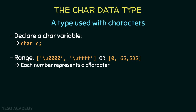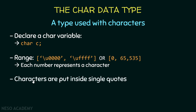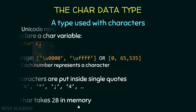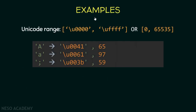As you already know, characters are put inside single quotes. For example, a capital A inside single quotes is a character, a star is a character, a semicolon is a character, and even a number inside single quotes is a character. Everything inside single quotes will be a character. Finally, a char variable takes two bytes in memory.